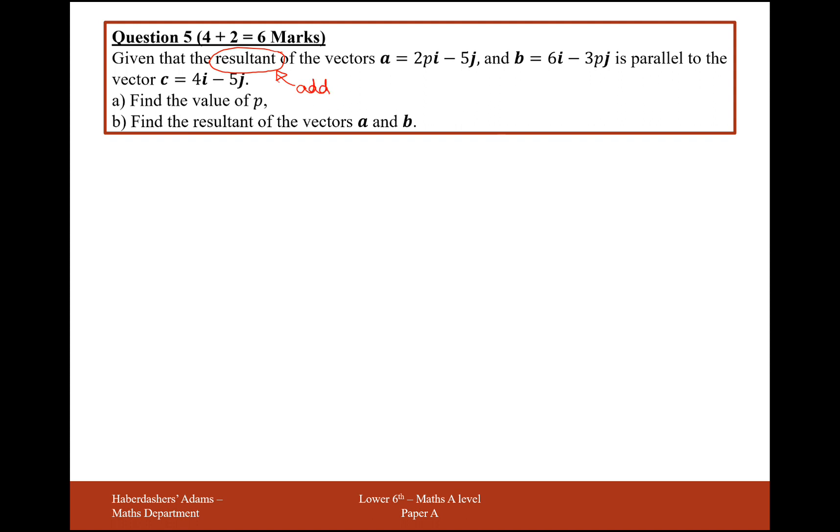So the addition of the vectors 2pi minus 5j and 6i minus 3pj is parallel to the vector 4i minus 5j. Calculate the value of p.